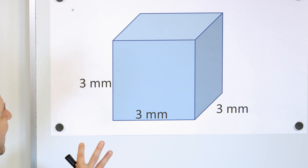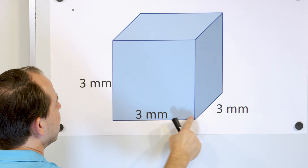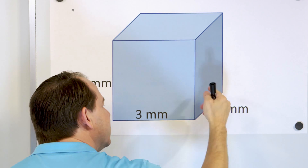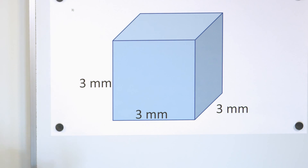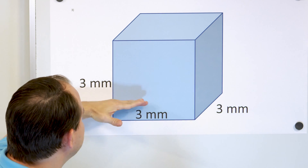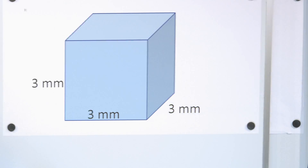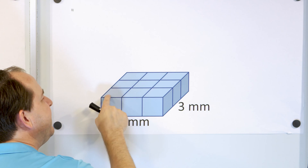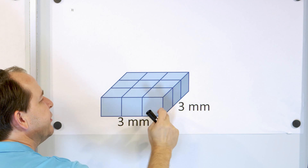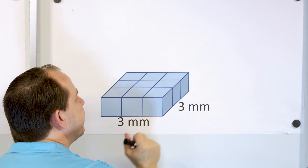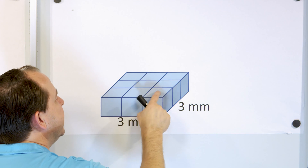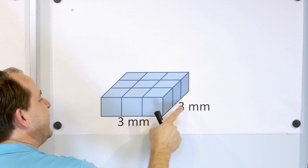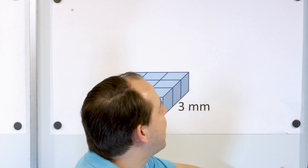Here's our next problem. This is actually a real cube, because all of the dimensions are three: three millimeters wide, three millimeters tall, and three millimeters deep into the board. How many cubic millimeters will fit? Let's first take a look at only the bottom layer. If it's three millimeters wide and three millimeters deep, there must be three cubes in one direction and three in the other — one, two, three, four, five, six, seven, eight, nine cubes in the bottom layer. Notice that three times three is nine.